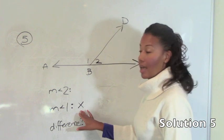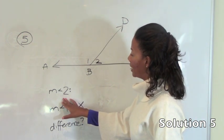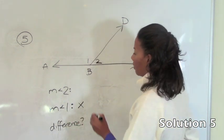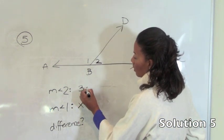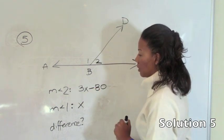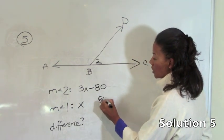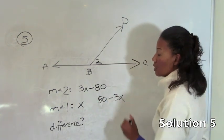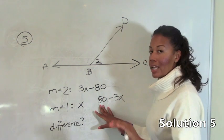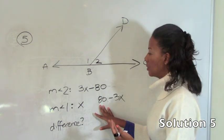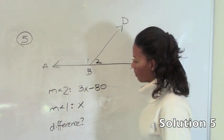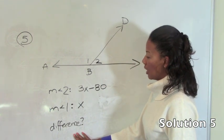So the measure of angle 2 is 80 degrees less than 3 times the measure of angle 1. So 3 times the measure of angle 1 is 3x and it is 80 degrees less than that. A common mistake is to put the 80 first because it is 80 degrees less than 3x. We say 80 first but we are actually taking it away from the 3x. So this one is not correct.